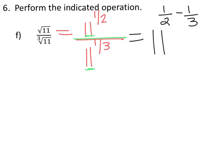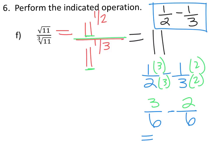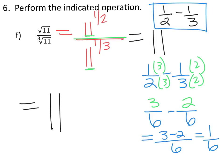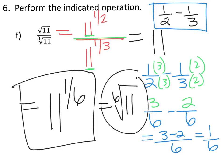Let's focus on those exponents. To subtract fractions we need common denominators. So 1/2 minus 1/3 — we want a common denominator of 6. We multiply the first fraction by 3/3 and the second by 2/2, giving us 3 minus 2 over 6, which equals 1/6. So the final answer is 11 raised to the 1/6. We could leave it like that, or write it back into radical form as the sixth root of 11. Both answers are equal.